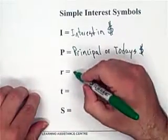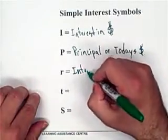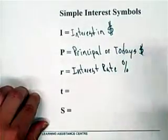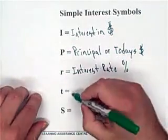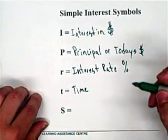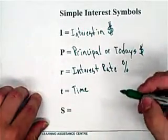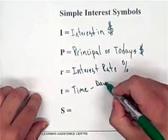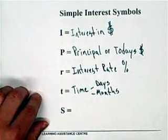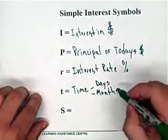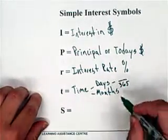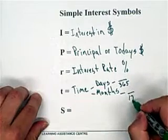R is our interest rate — so the percentage. T is our time. Now for time, there are two ways we can express it: we can do time in days or we can do time in months, and it just depends on what the question says. If we use days, then you have to divide by 365. If you use months, then you have to divide by 12.